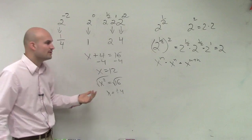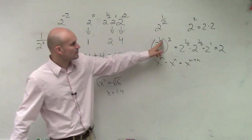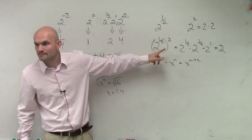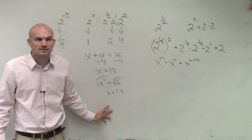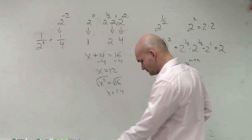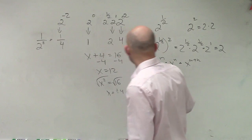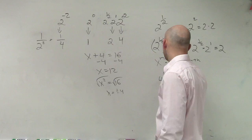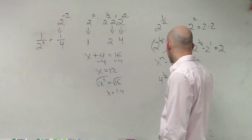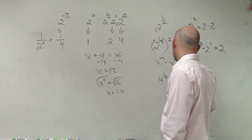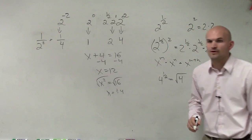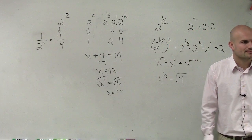So what we're saying is raising something to the 1 half power is the exact same thing as taking the square root. So if I gave you a number, if I did 4 to the 1 half power, you guys can plug this in your calculator, that's going to be exactly the same thing as the square root of 4. These are equivalent.